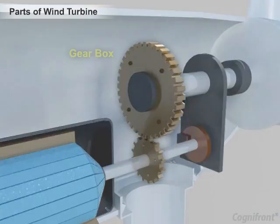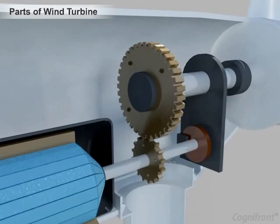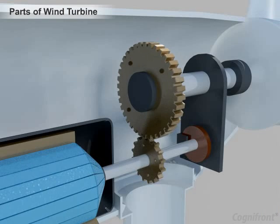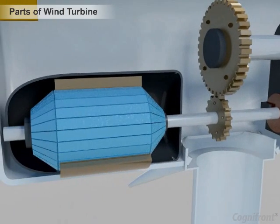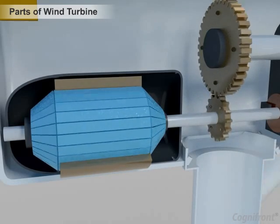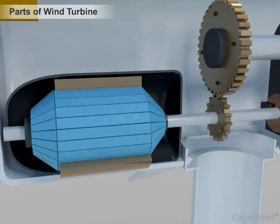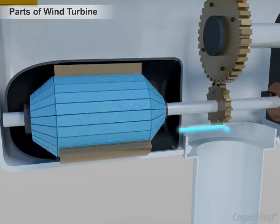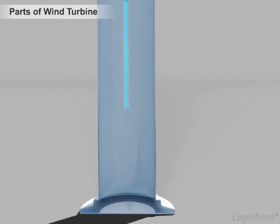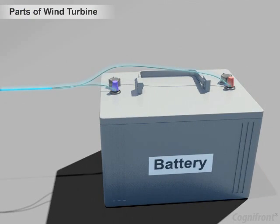Next is the gearbox, which can be used to increase the output speed. Next is the generator. The high speed rotating shaft is connected to the generator. Because of this the generator rotates and electricity is produced. This electricity can be stored in batteries and can be used whenever necessary.